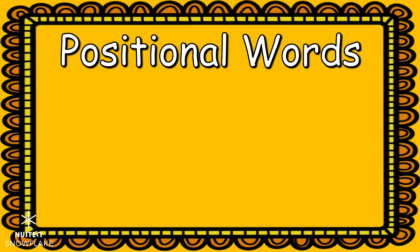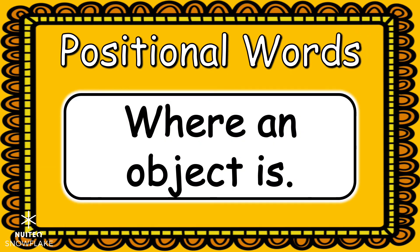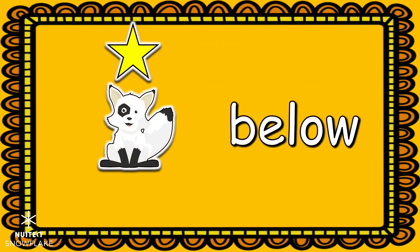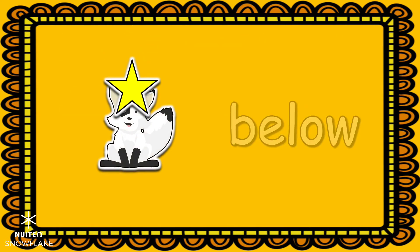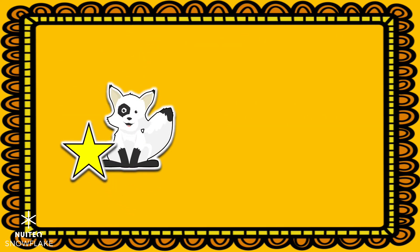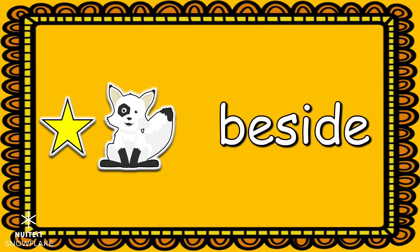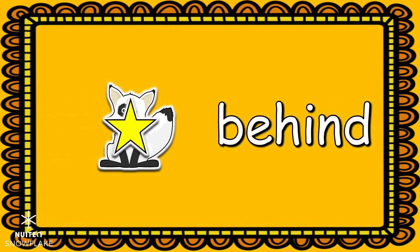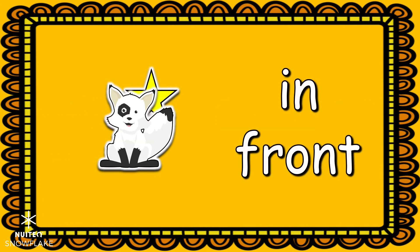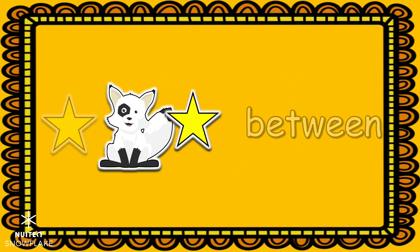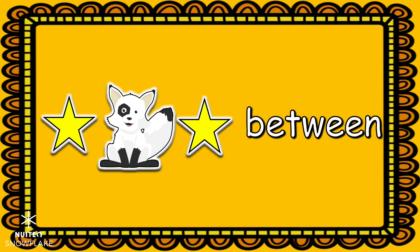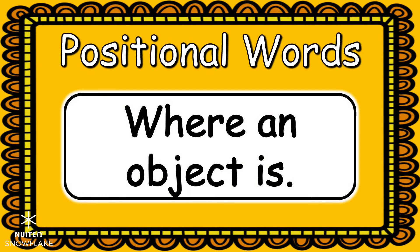Remember friends, we use positional words to help us know where an object is. Let's review our positional words: below, above, beside, behind, in front, between. Great job using positional words to tell where something is.